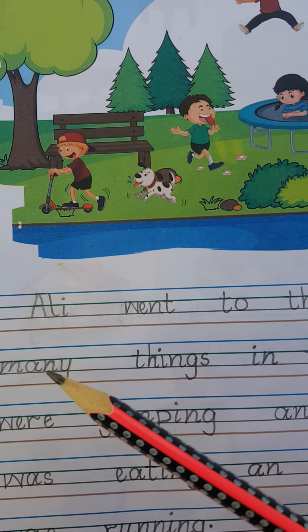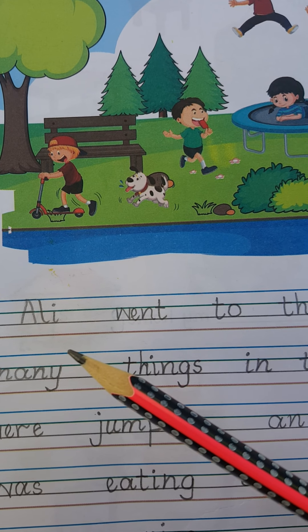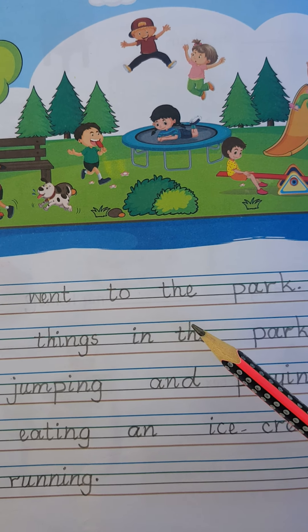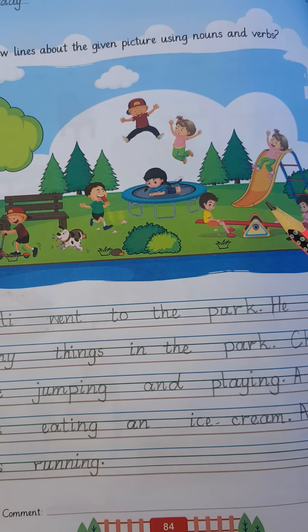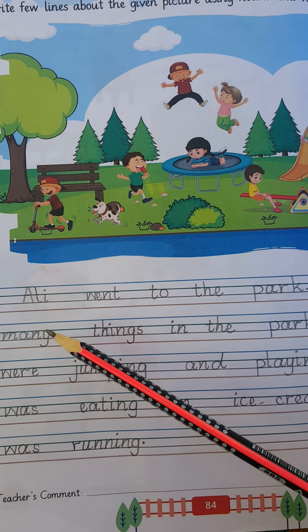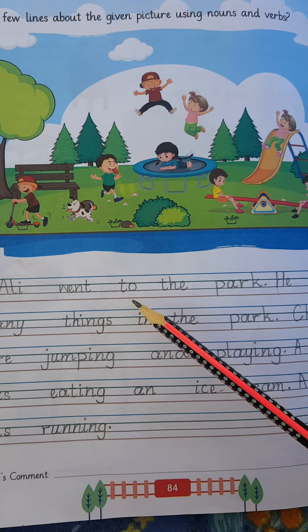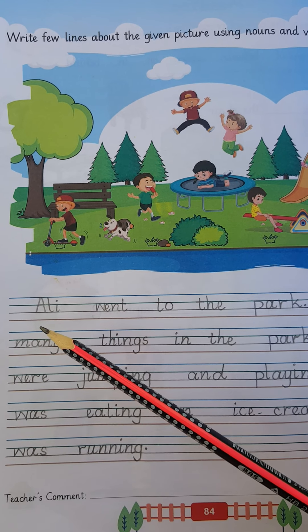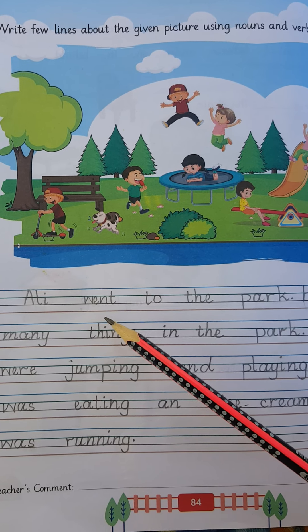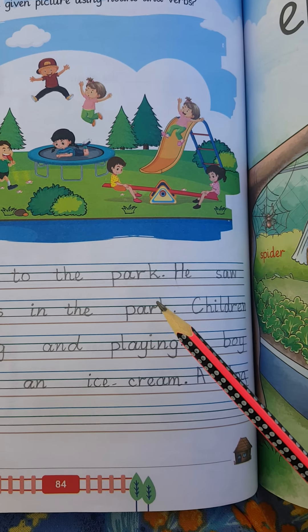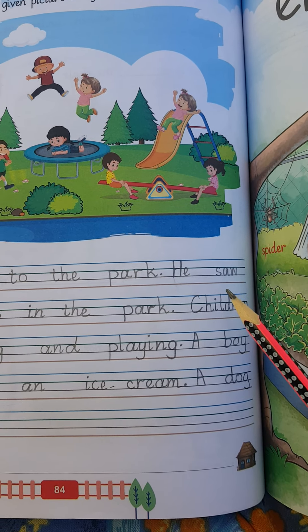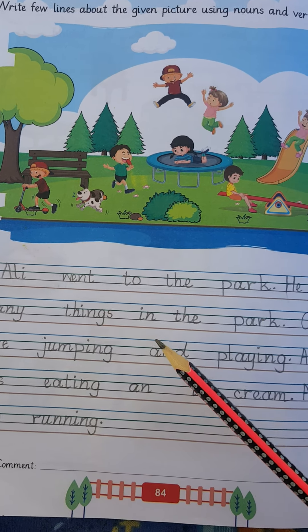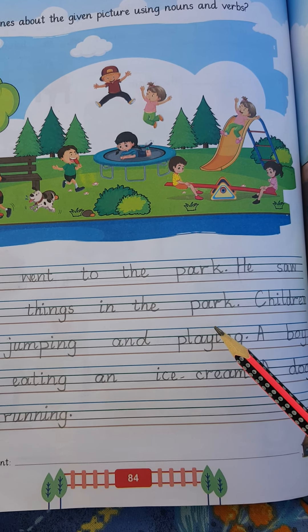Let's start. You can see that I write: Ali went to the park. It's a park. Ali went to the park. Park is a noun. Ali is a noun. Went is a verb.